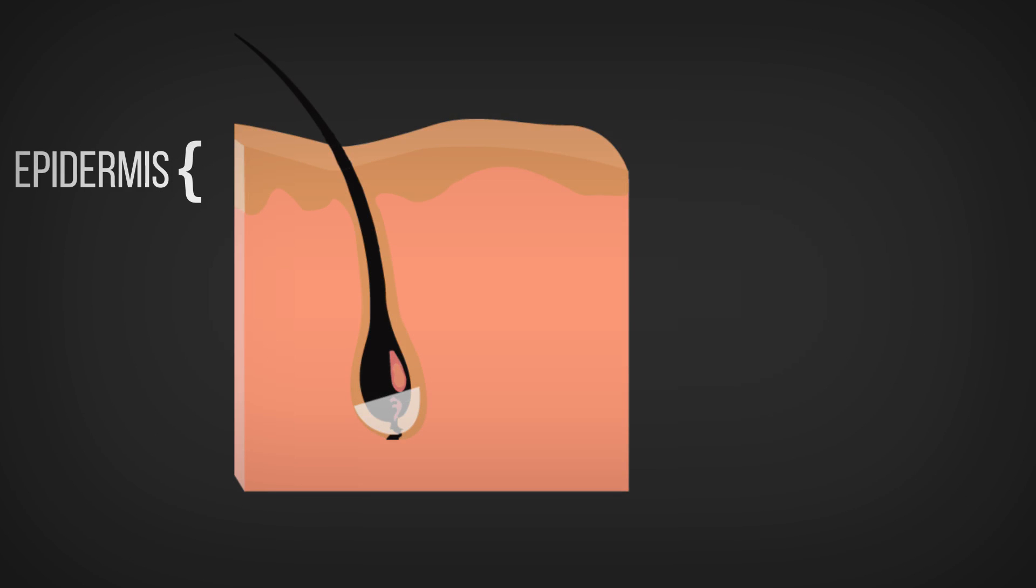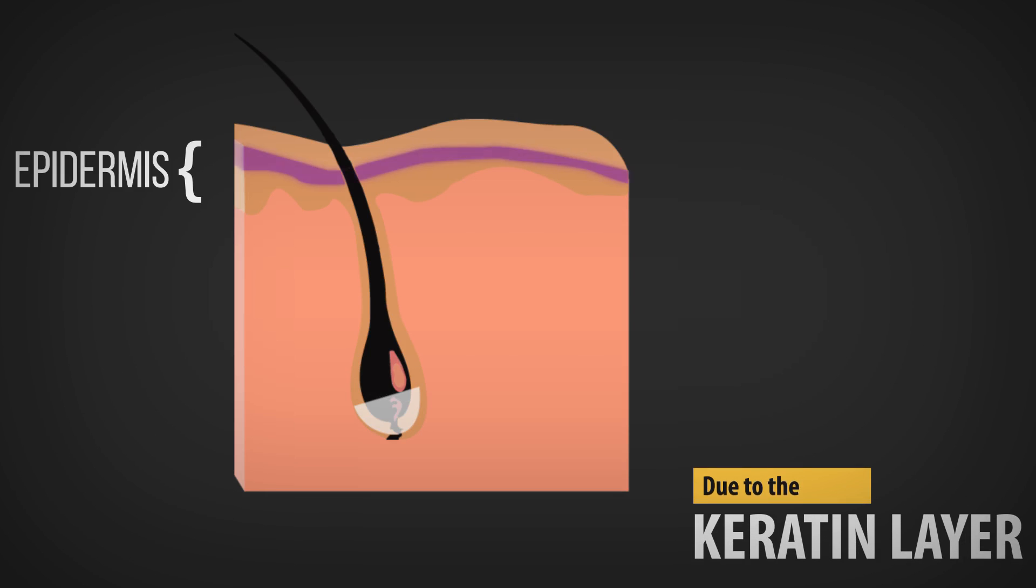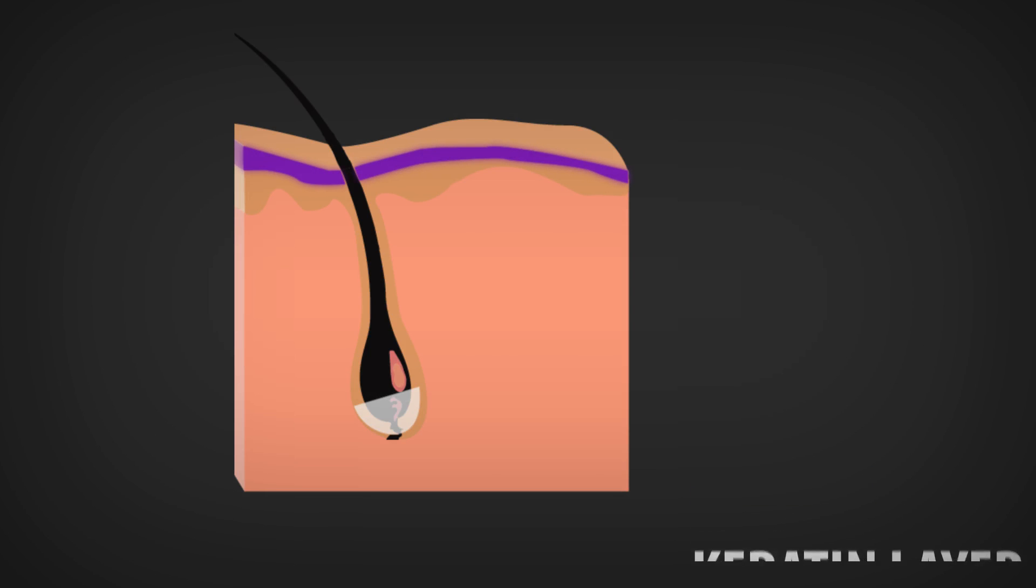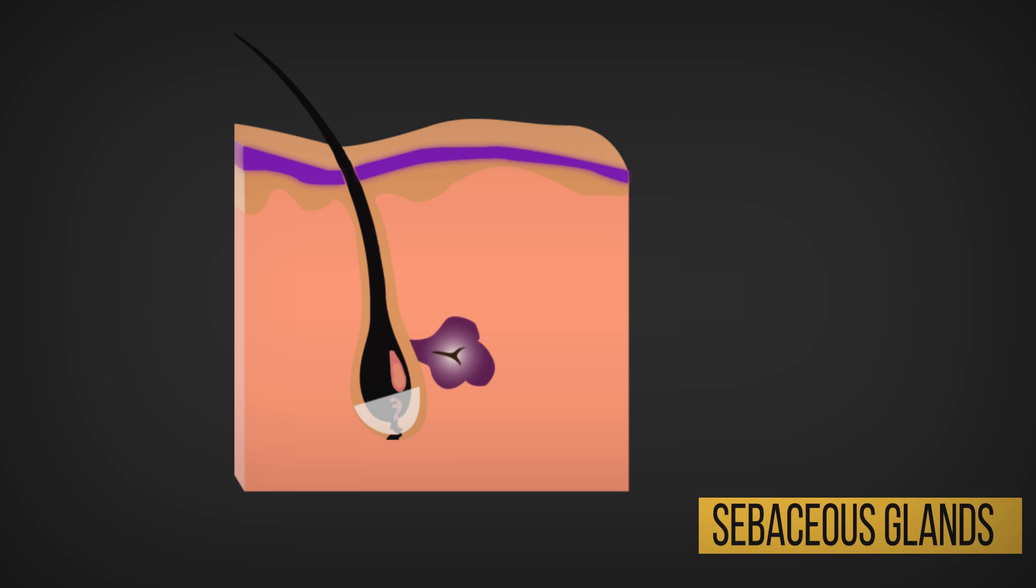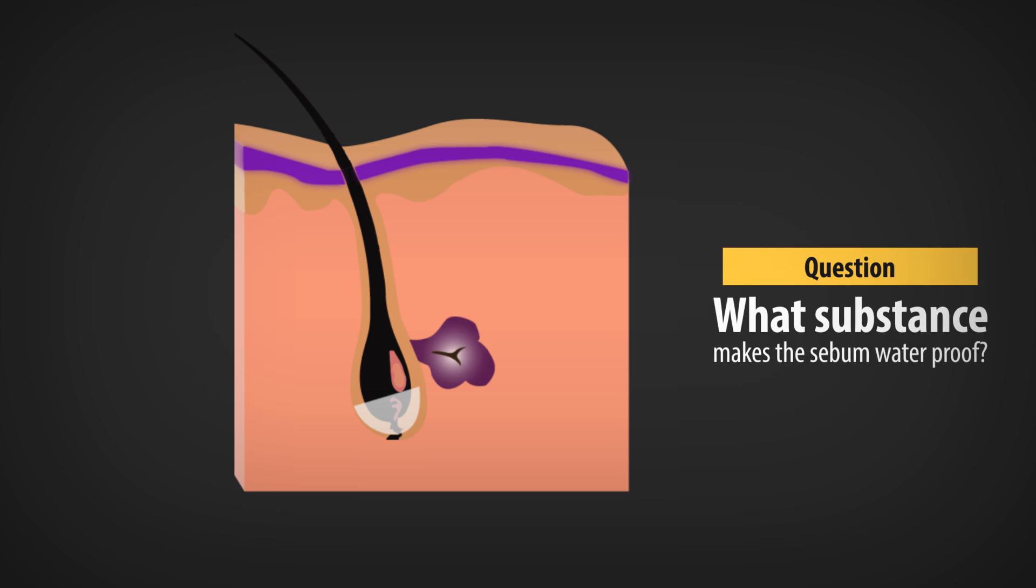The outer layer of the skin is somewhat waterproof due to the hard keratin layer, but it isn't enough to beat the sun. The dermis of the skin contains sebaceous glands. It secretes waterproof sebum onto the skin surface. Can you guess what substance gives the waterproof ability to sebum?